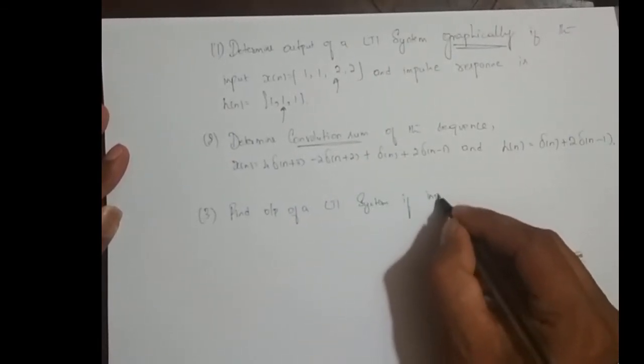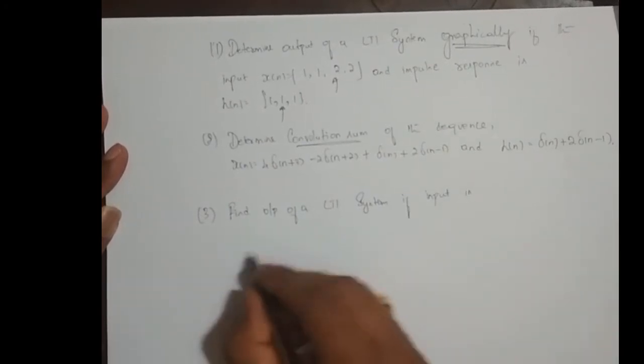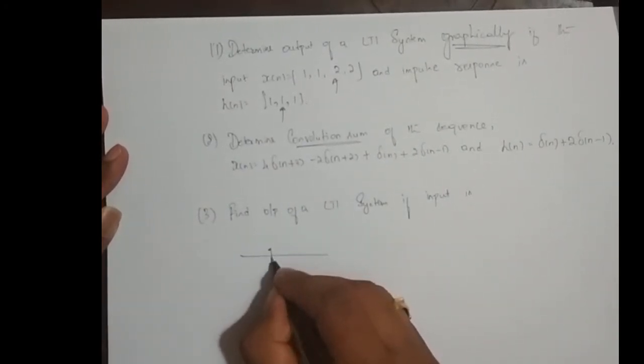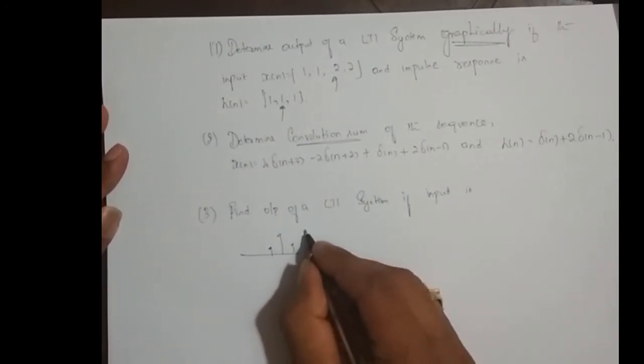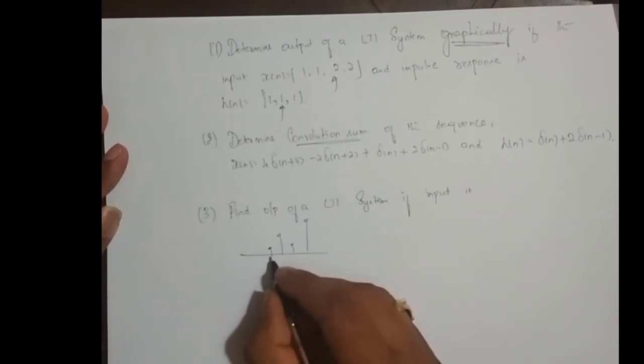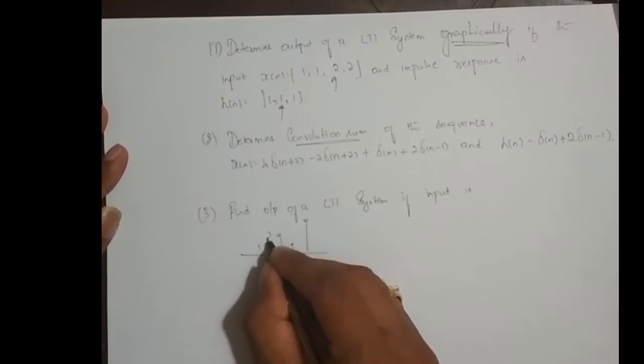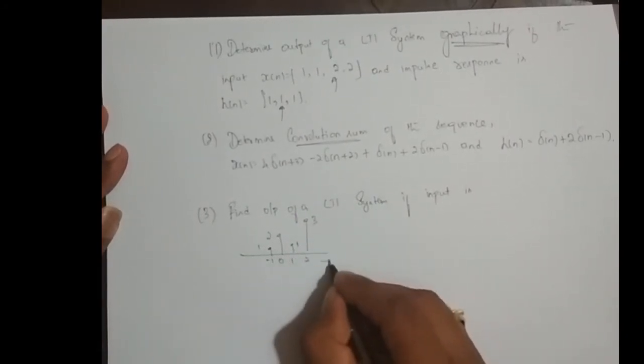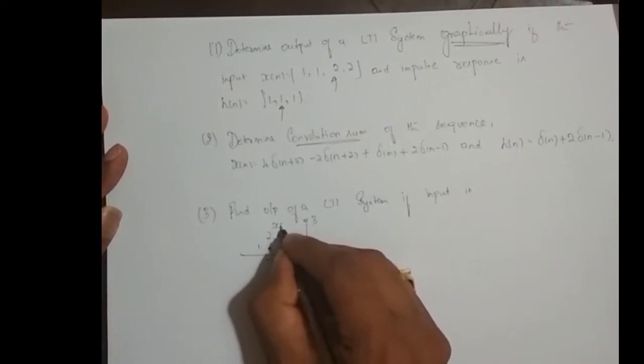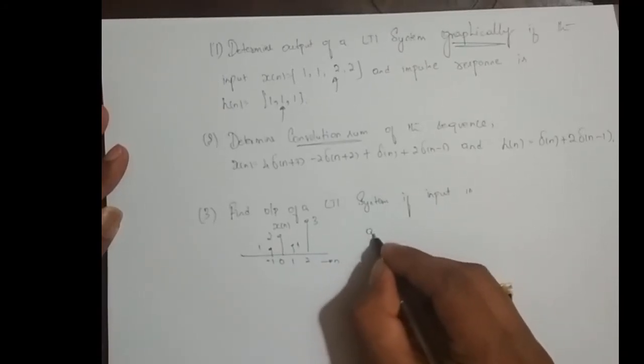if input is 0, 0, 1, 0, 1, 1, 2, 1, 3. This is input and impulse response